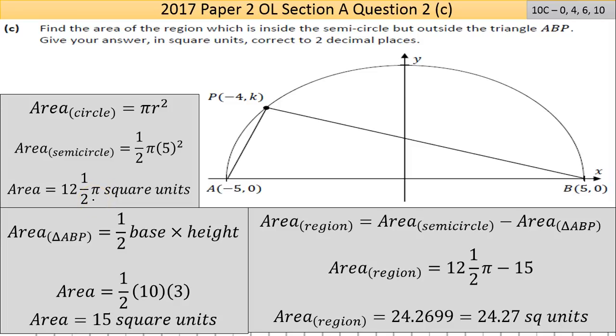So the second part, there's the area of the triangle. Now it's a right-angle triangle - we just proved that - so we can use a half base by height. The base there is 10, the height is 3, so half of 10 times 3 is 15. So you're taking those two away: 12 and a half times π, take away 15. The calculator will do the heavy lifting. I'm now going to go decimal: that's 24.2699.